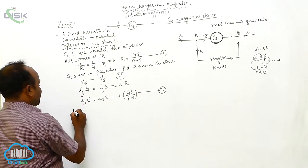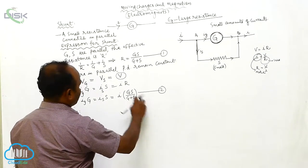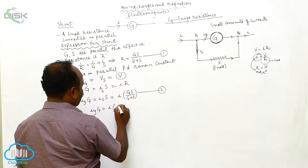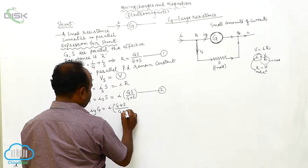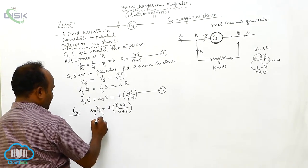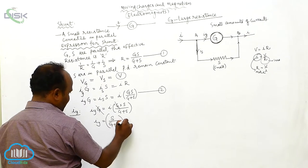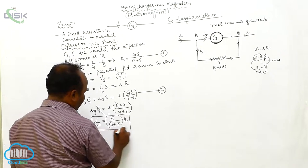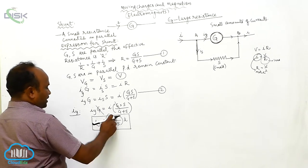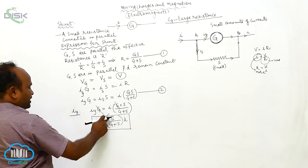What is the expression for IG? From the second equation, IG × G = I × (G·S)/(G+S). Simplifying: IG = I × S/(G+S). Therefore, the current passing through the galvanometer equals the shunt resistance divided by the total resistance (G + S), multiplied by the total current. That is: IG = (S / (G + S)) × I.